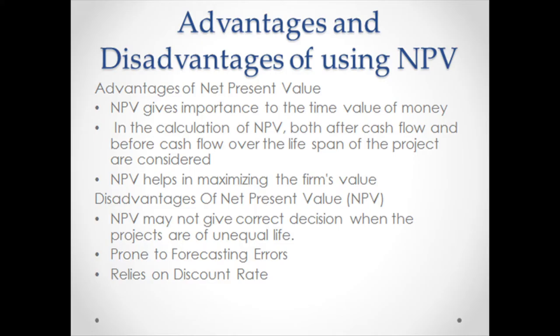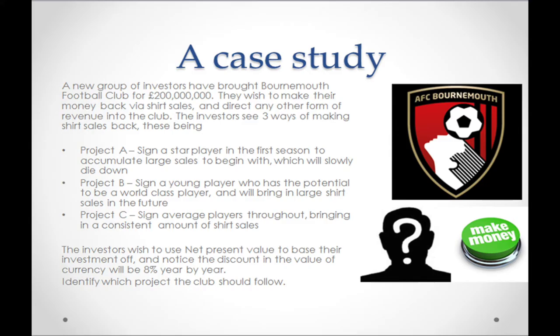Net present value is also prone to forecasting errors. In order to forecast a project's cash flows to calculate its NPV, a business makes various assumptions — the longer a project's expected life, the harder this becomes. A two-year forecast might be fairly accurate, whilst a projection over 10 years is essentially a guess. If a project's actual cash flow turns out to be less than estimated, you could lose money on your investment. A further disadvantage is that it relies on a discount rate, which is often difficult to calculate accurately. Small changes in interest rates can significantly affect the project's NPV, and an inaccurate discount rate could lead to investing in an unprofitable project or passing on a profitable one.